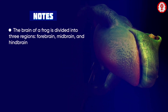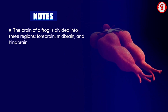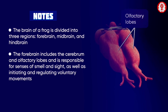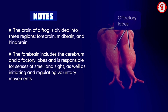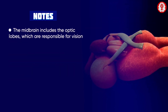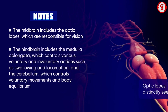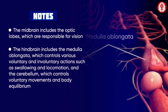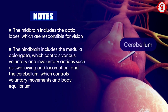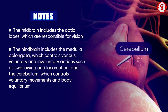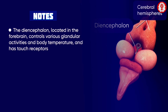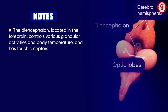In summary, the brain of a frog is divided into forebrain, midbrain, and hindbrain. The forebrain includes the cerebrum and olfactory lobes, responsible for smell, sight, and voluntary movements. The midbrain includes the optic lobes responsible for vision. The hindbrain includes the medulla oblongata, controlling voluntary and involuntary actions, and the cerebellum, controlling voluntary movements and body equilibrium. The diencephalon controls glandular activities, body temperature, and has touch receptors.